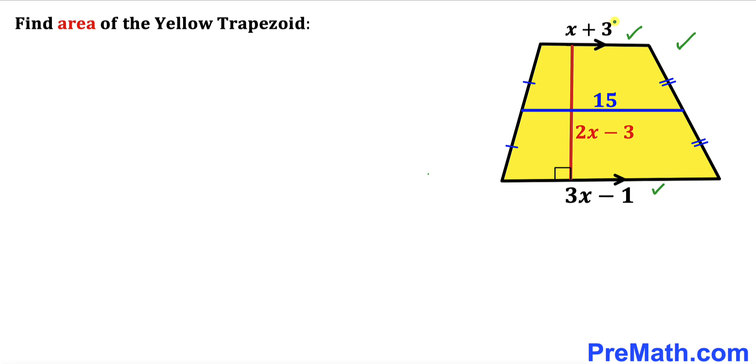Moreover this mid segment is 15 units and furthermore the height of this trapezoid is represented by 2x minus 3. Now we are going to calculate the area of this yellow trapezoid.